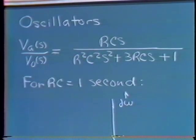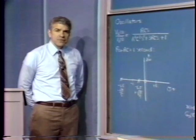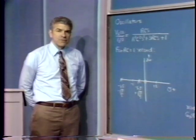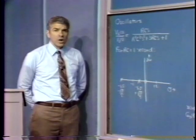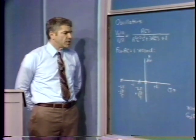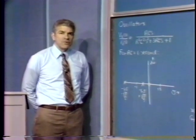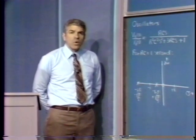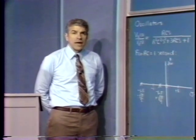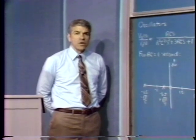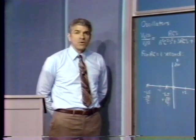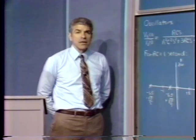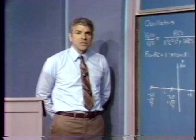So the Wien bridge gives us positive phase shift at low frequencies, negative phase shift at high frequencies, and at a frequency ω = 1/RC, the Wien bridge gives us no phase shift and an amplitude of 1/3 from input to output. Consequently, if we surround the Wien bridge with an amplifier with a gain of precisely 3, we can form a positive feedback loop where the loop transmission magnitude is precisely 1 at only one frequency — in particular at ω = 1/RC. The Wien bridge provides an attenuation of 1/3, the operational amplifier provides a gain of 3, and so we have a loop transmission whose magnitude is precisely plus 1.